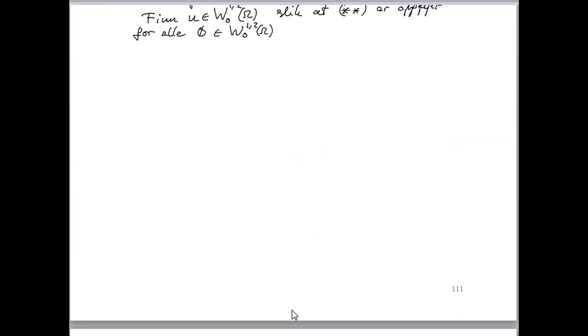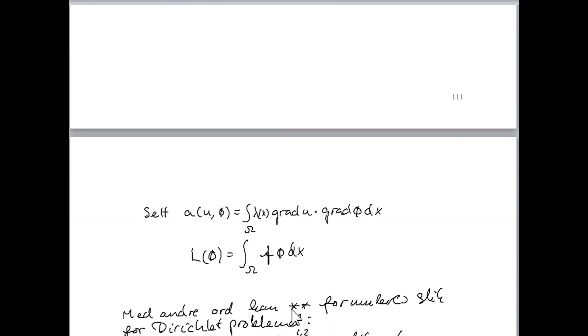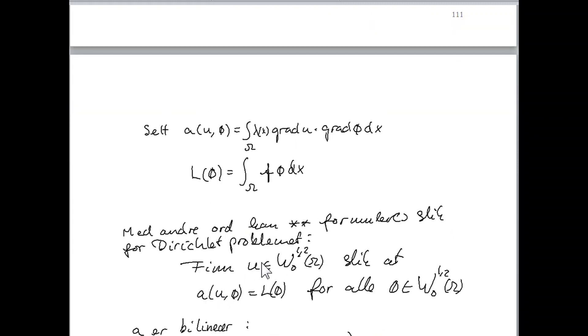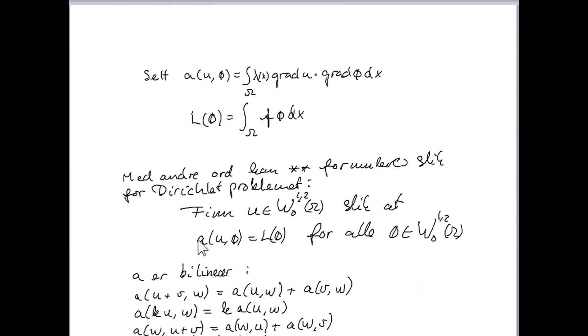Then we have a more general situation. And we can formulate the problem in the following form. Find u element in W_0 such that a(u, phi) is equal to l(phi) for all phi in W_0.